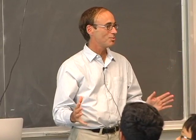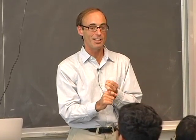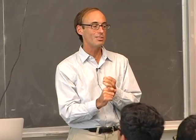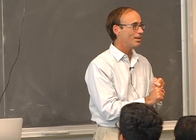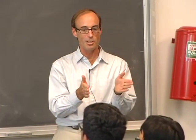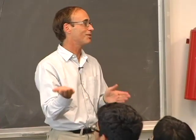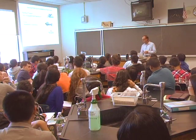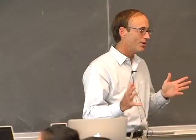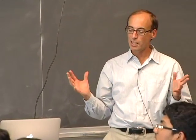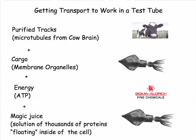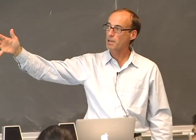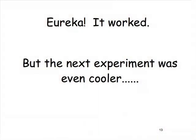Two things about science: you fail a lot, and when you fail you can sometimes score bigger than if you succeeded — because failure means some ideas were wrong, and figuring out where you went wrong can lead to a bigger discovery. So what to do next? We figured something was missing. We added back what I'll call 'magic juice' — basically soluble proteins from the cells floating around in the cytoplasm — and it worked. The cargo started moving.